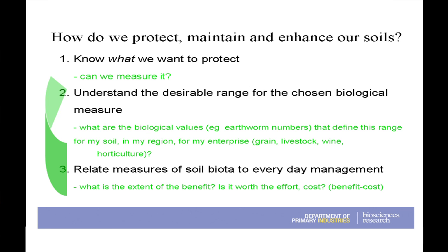We have to think about strategies to address soil security and hence food security. We can maintain and protect the resource currently, we can try to enhance it, or we have to think about how we might use land that we currently classify as marginal. To protect, maintain and enhance our soil, we need to know what we want to protect and whether we can put metrics around that. We need to understand the desirable range for the chosen biological measure — the current measure, the attainable measure, and where we need to be to promote better ecosystem services.